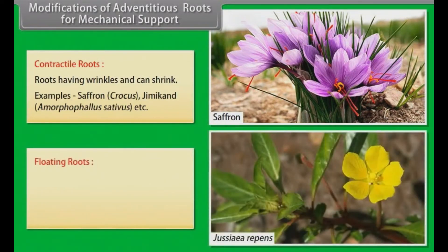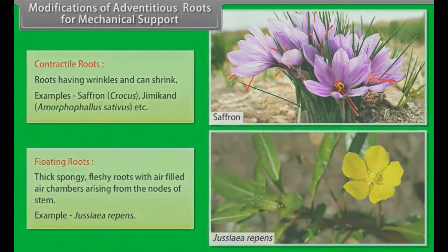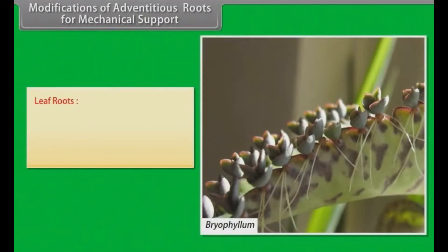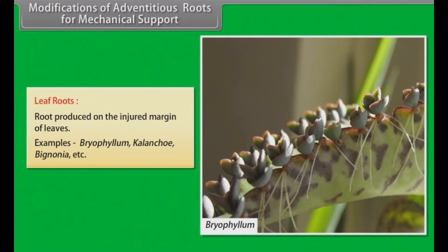Floating roots: Thick, spongy, fleshy roots with air-filled chambers arising from the nodes of stem. Example: Jussiaea. Leaf roots: Roots produced on the injured margin of leaves. Examples: Bryophyllum, Bignonia, etc.